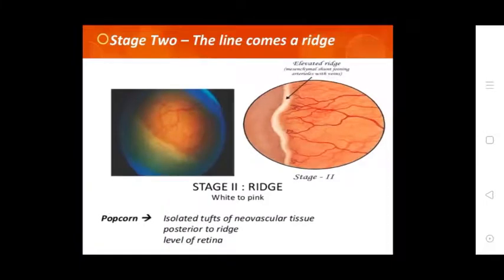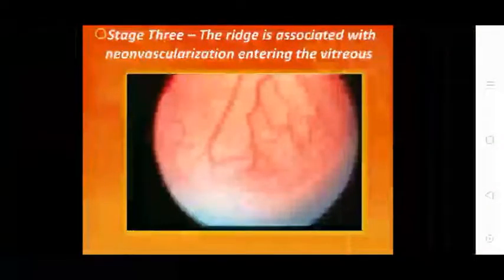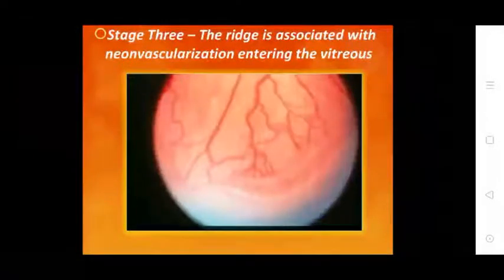Stage 2 is an elevated ridge. Stage 3 involves moderately abnormal blood vessel growth with isolated tufts in the posterior retina. In Stage 3, the abnormal blood vessel growth ridge is associated with neovascularization entering the vitreous, and vitreous hemorrhage may occur.